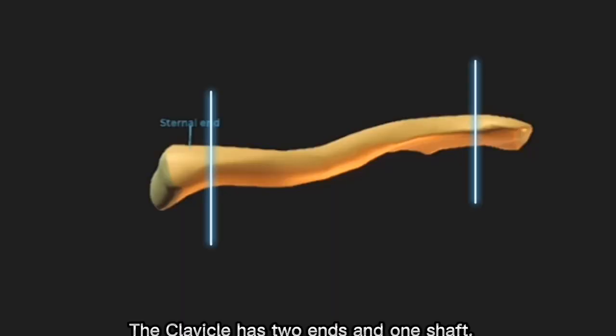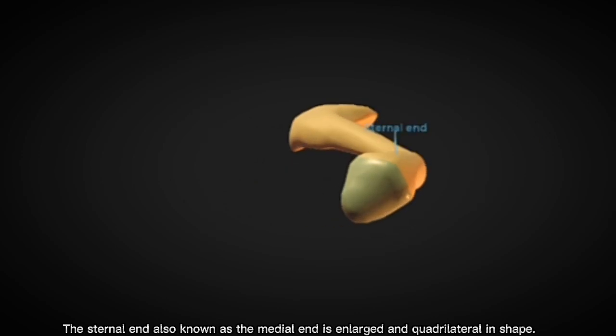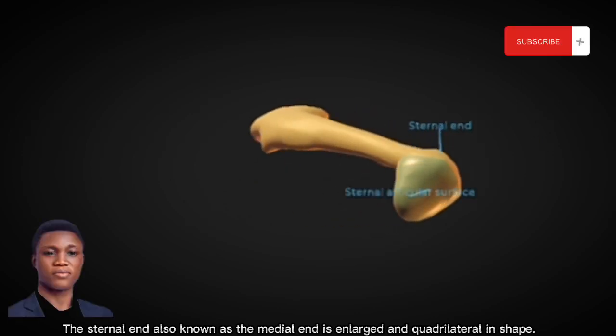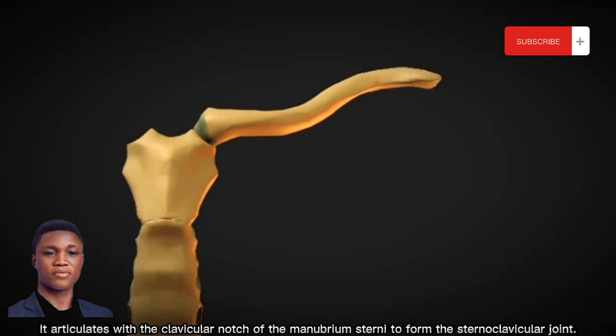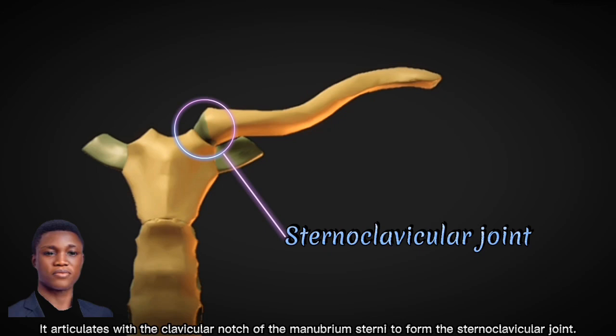The clavicle has two ends and one shaft. The sternal end, also known as the medial end, is enlarged and quadrilateral in shape. It articulates with the clavicular notch of the manubrium sterni to form the sternoclavicular joint.